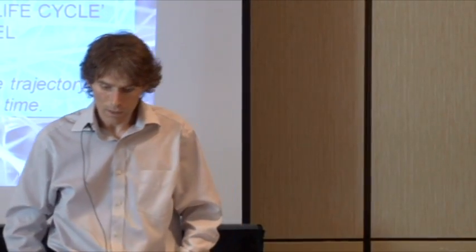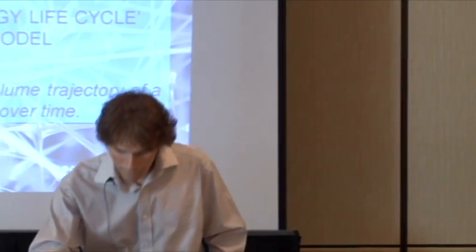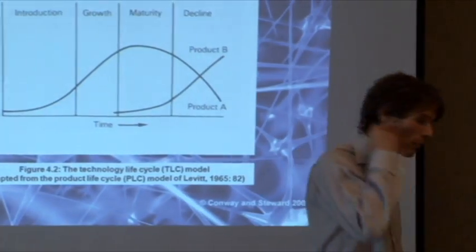So the first model I want to look at is something called the technology life cycle. This basically maps the sales volume of a technology or an innovation over time. And actually, this is nothing sophisticated - it's simply an aggregation of lots of product life cycles. If you have lots of products developed under a particular technology, the technology life cycle is simply an aggregation of all those, which is why it looks like the product life cycle.